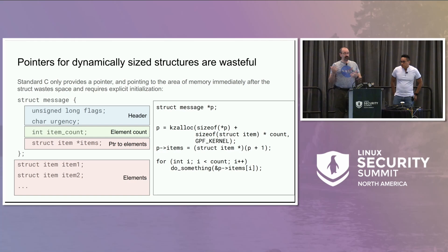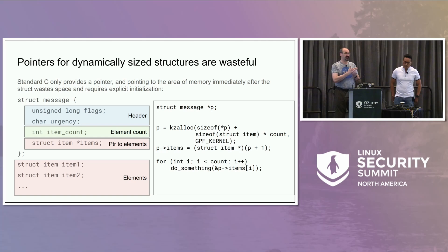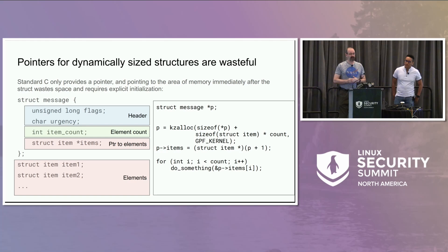You could have a pointer to the items, where this pointer would point to immediately after itself. It's a kind of pointless exercise, but at least you have an association inside the initial header structure that you are going to be followed by a whole list of items. You're still doing the terrible casting and the weird iteration, but at least there's an association.